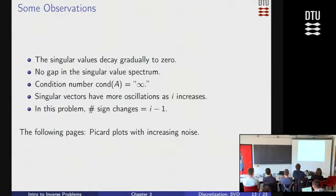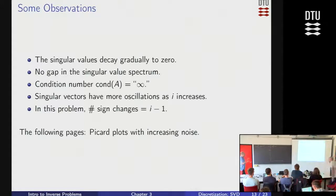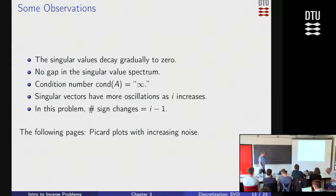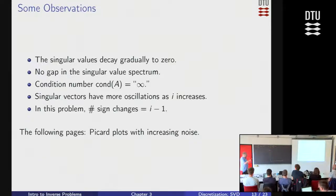We can conclude that singular values decay to zero with no real gap anywhere in the singular value spectrum. They decay fast sometimes, not so fast other times, but it's not like there's a bunch of big guys and a bunch of small guys. The condition number is big in most of these problems. We have oscillations in the singular vectors, and quite often the number of sign changes is equal to the index i minus one — one way of defining a frequency.